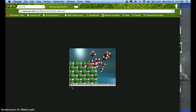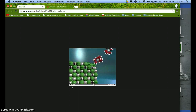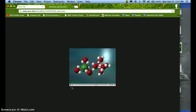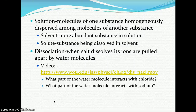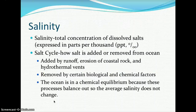Solvated ions move off the surface and become separated in solution. Water molecules cluster around anions with the hydrogens directed toward the negatively charged ion, and interact with positively charged cations through the lone pairs of electrons on the oxygens. Consider: what part of the water molecule interacts with chloride, and what part interacts with sodium? Think about water's polarity and the two ions in the salt crystal.